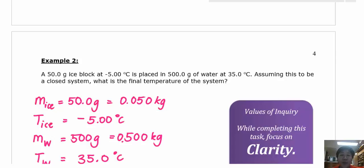First thing, solving all physics problems, is either draw a diagram if you need one or write down the things that you're given in the problem. This is a classic example of a really standard latent heat problem. I've got 50 grams of ice block at negative 5 degrees and it's placed in 500 grams of water at 35 degrees Celsius. Assuming this to be a closed system, what is the final temperature of the system itself?